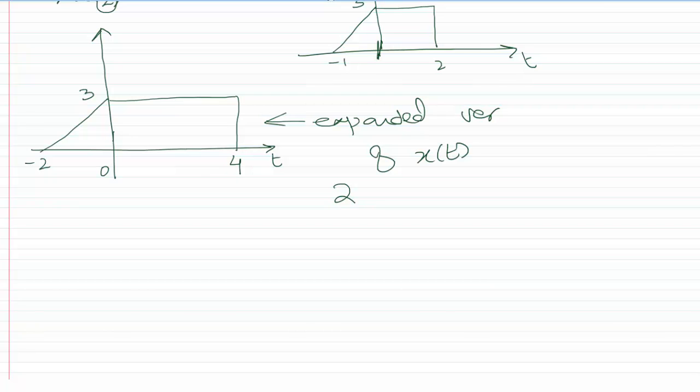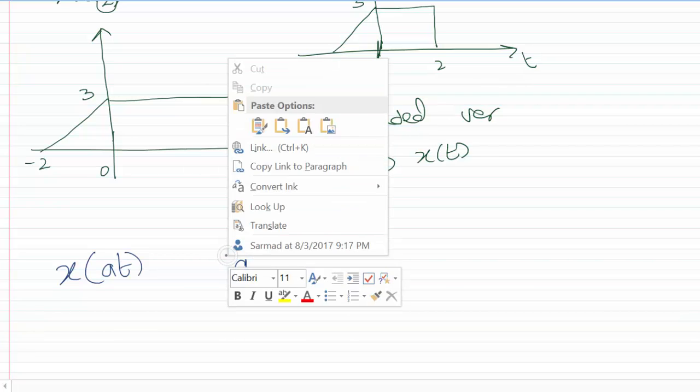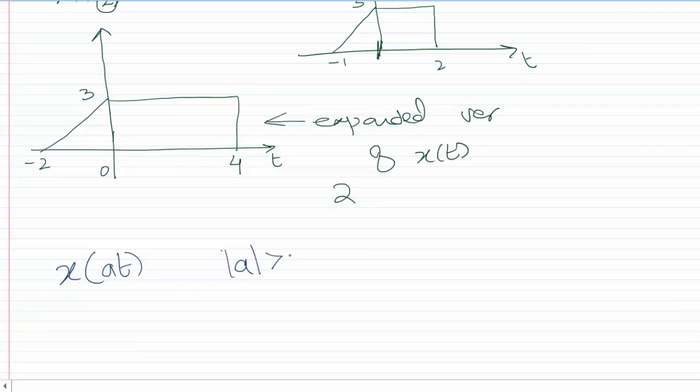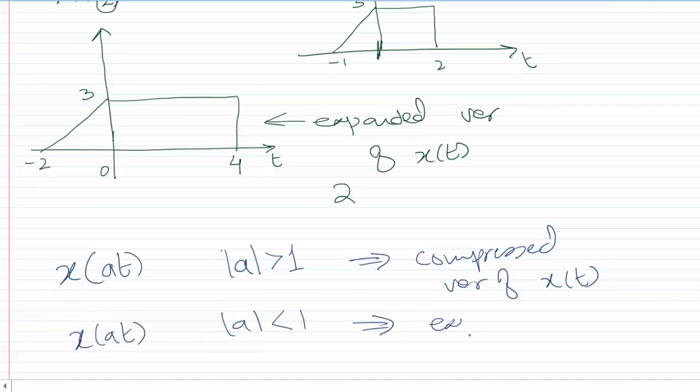Before we leave, just a last thing: whenever we are asked to plot x of at and the magnitude of a is greater than 1, then x of at is going to be the compressed version of x of t. And if you're asked to plot x of at where the magnitude of a is less than 1, then we're going to get the expanded version of x of t.